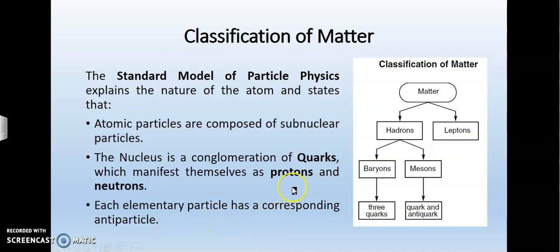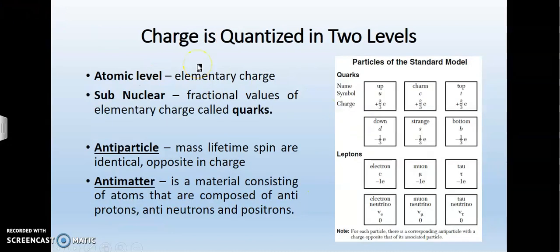Charges are quantized in two levels. At the atomic level, we're used to the elementary charge and the number of electrons in a valence shell giving an atom either a positive ionization, a negative ionization, or a neutral status. But there's also a sub-nuclear charge - these are the fractional values of elementary charge called the quarks. These quarks have either two-thirds or negative one-third of the charge of an electron. This is very important because when we add them up later, we're going to see where we get a positive one elementary charge for a proton, a negative one elementary charge for an electron, and a zero charge for a neutron.